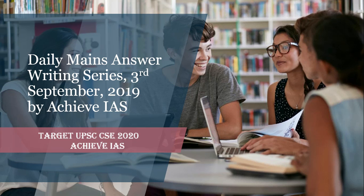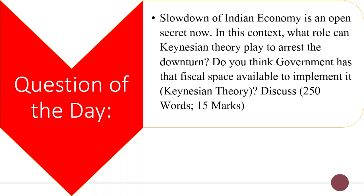In this video we will be talking about our daily mains answer writing series. This series is about daily mains answer writing, in which we daily give you one question and you have to write the answer. Today is 3rd September. The question of the day is: 'Slowdown of Indian economy is an open secret now. In this context, what role can Keynesian theory play to arrest the downturn? Do you think the government has that fiscal space available to implement it? Discuss.'